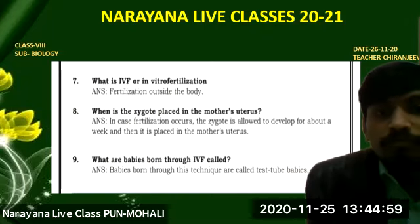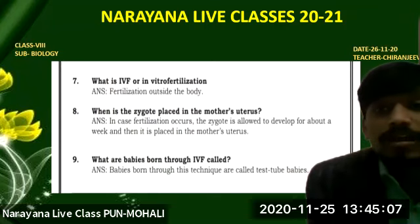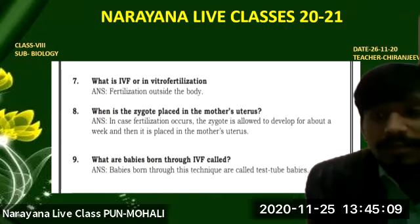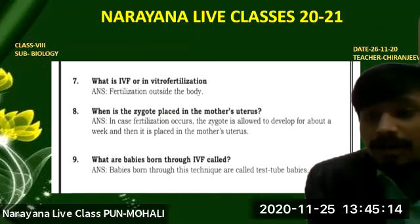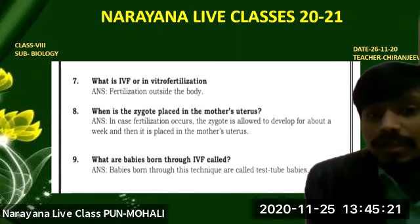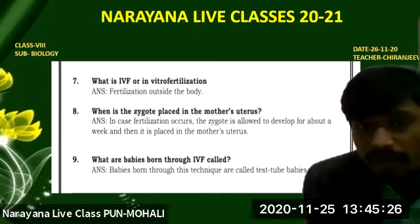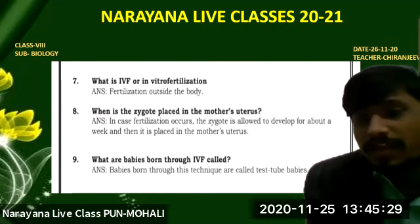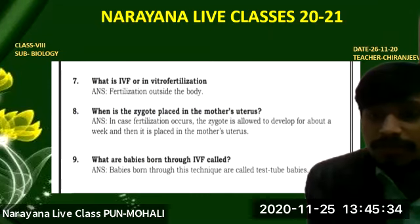Next: when is the zygote placed in the mother's uterus? In vitro fertilization is a process where fertilization occurs outside the female body, where the fusion of male and female gametes occurs artificially. After fertilization, the zygote which is formed is kept for about a week, and after that it is transferred and placed in the mother's uterus.